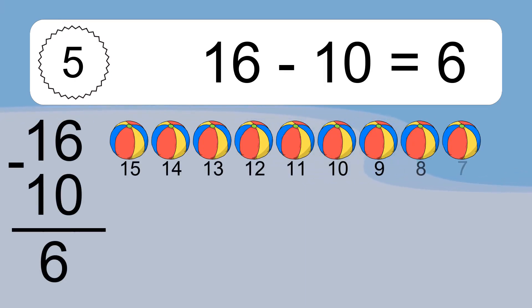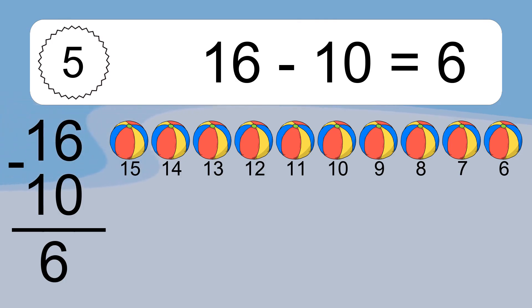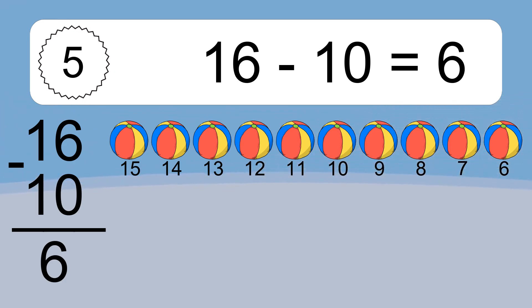16 minus 10 equals what? 16 minus 10 equals 6. Let's count it: 15, 14, 13, 12, 11, 10, 9, 8, 7, 6.